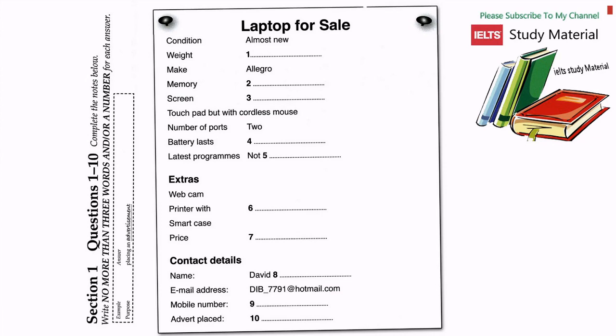Can you give more details about the one you want to sell? Well, it's an Allegro and it's got all the latest programs. What about the memory? The memory is only 0.5 gigabytes. And what about the screen size and the other features? The screen is 37.5 centimetres with a standard size keyboard and a touchpad. But I've got a cordless mouse that I can put in with it if necessary.